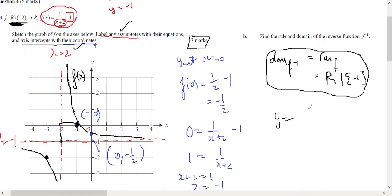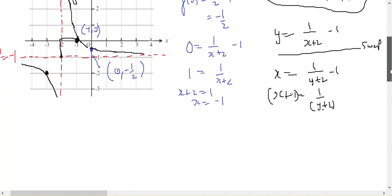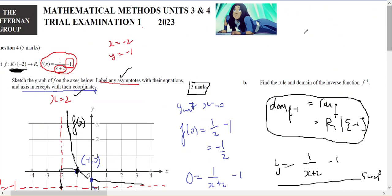If I do y equals 1 over (x+2) minus 1, swap. Therefore x equals 1 over (y+2) minus 1. I'm going to move this term and that term in two moves. So y+2 equals 1 over (x+1). So the inverse of x equals 1 over (x+1) minus 2. And that's question number 4.